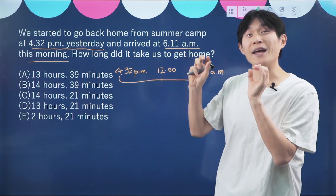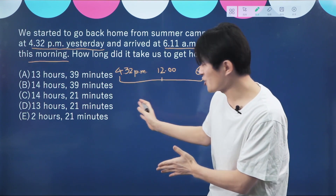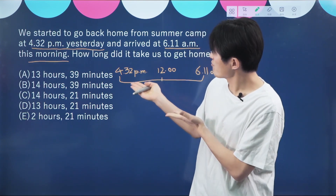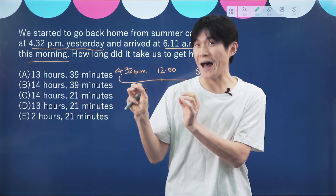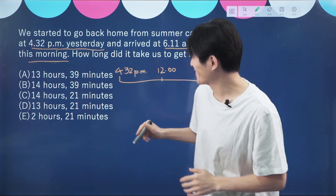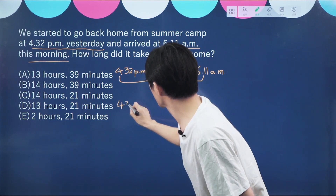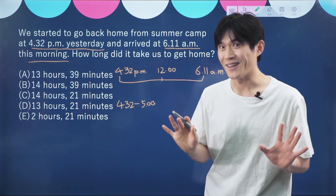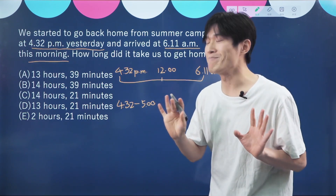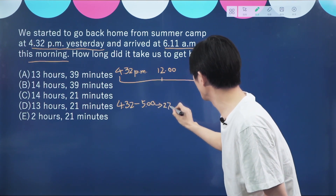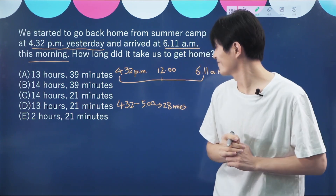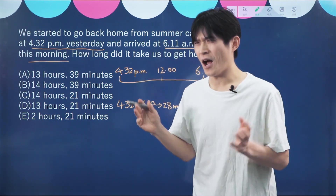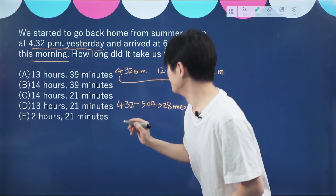We need to split it in half. First calculate yesterday — this part — and then today — this part. So it's 4:32 p.m. What is the closest hour to 4:32 p.m.? It's 5 p.m. So from 4:32 p.m. to 5 o'clock will be 28 minutes. We write it here. And then from 5 p.m. to midnight, 12 o'clock — how many hours? 12 minus 5.